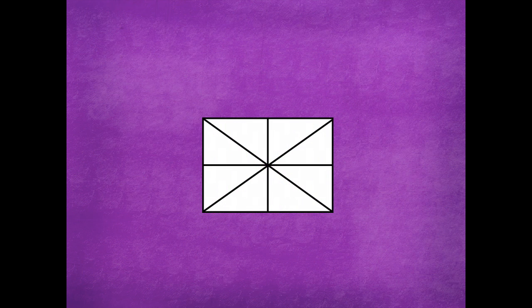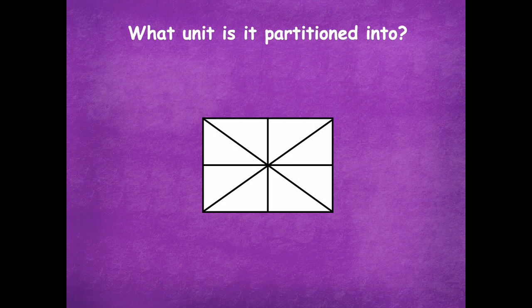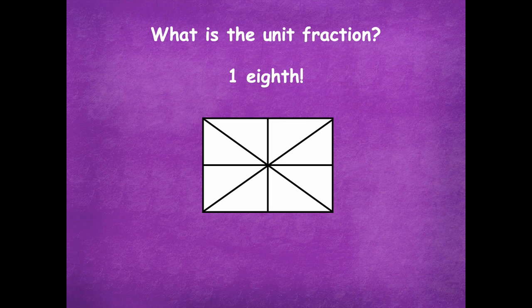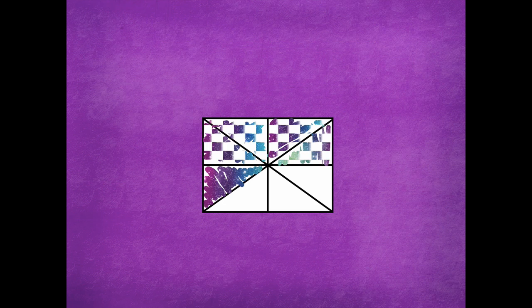The rectangle below is one whole. What unit is it partitioned into? How many equal parts? Eighths — good job. What's the unit fraction? One-eighth, because we're talking about one part for the unit fraction. And I'm going to shade that in.